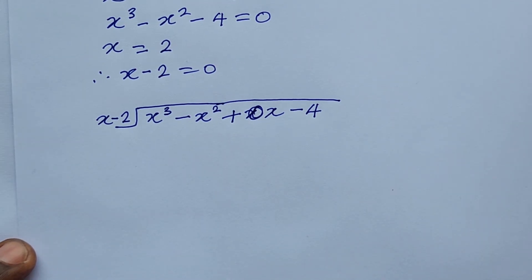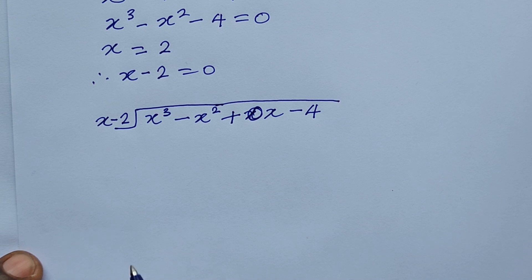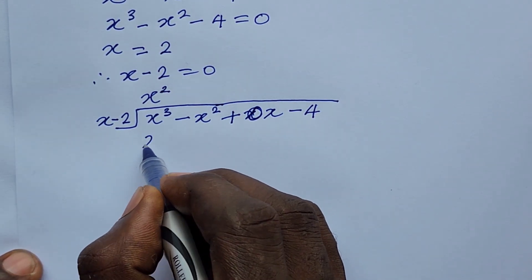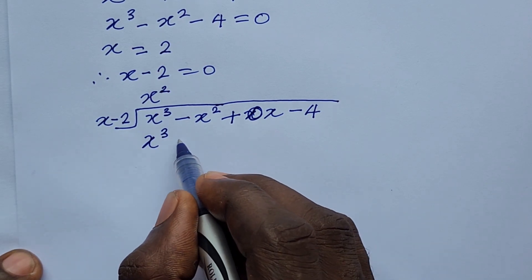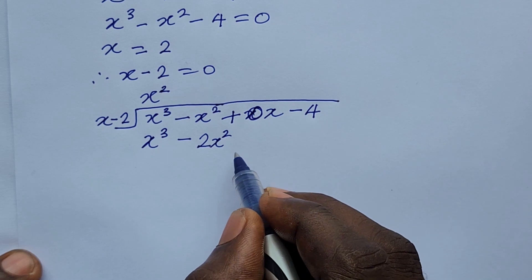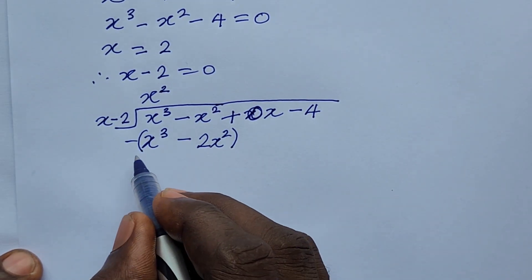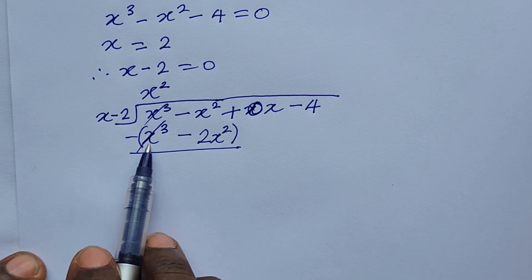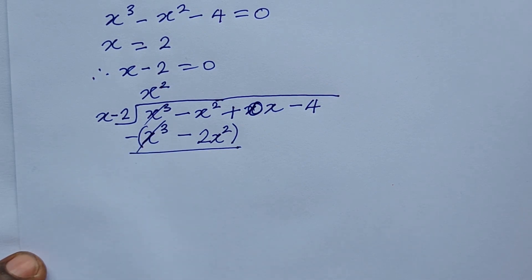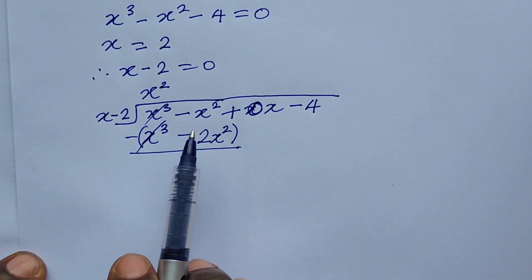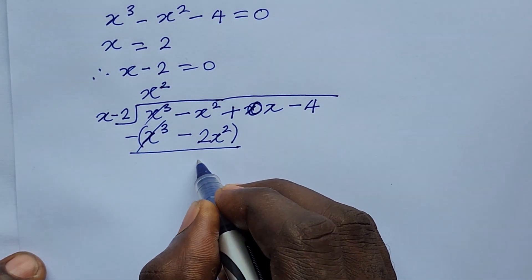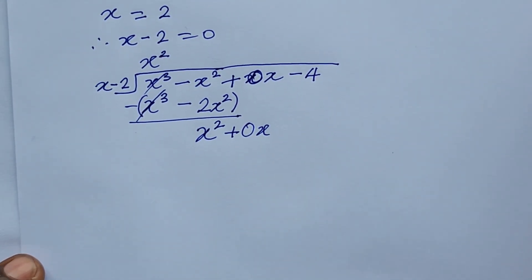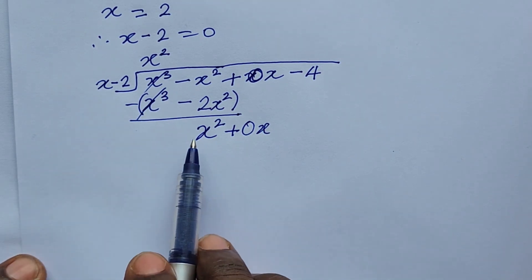We proceed: we use x to divide x to the power of 3, which gives us x squared. We put x squared in the quotient, then multiply everything: x squared times x gives x to the power of 3, and x squared times minus 2 gives minus 2x squared. We subtract, and since we have plus x cubed minus x cubed, those cancel, leaving minus x squared plus 2x squared, which gives positive x squared. Bring down the 0x term.